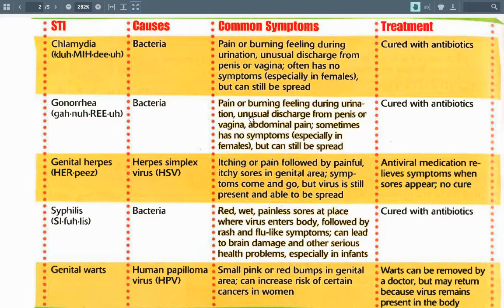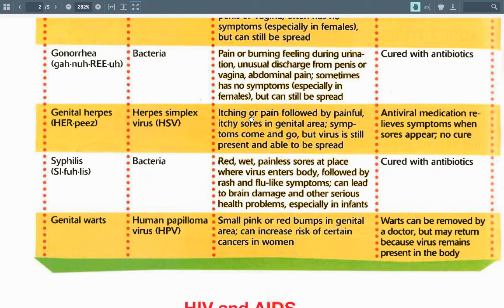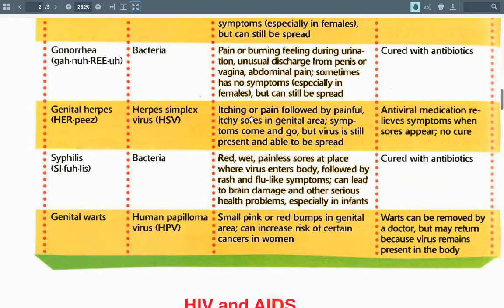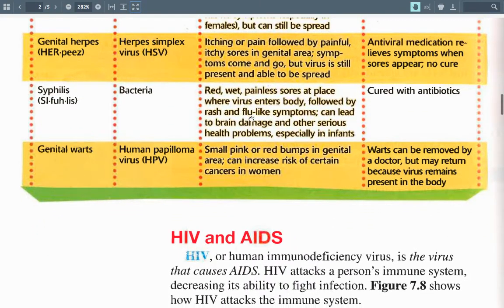Genital herpes is caused by the herpes simplex virus. Symptoms include itching or pain followed by painful sores in the genital area. Symptoms come and go, but the virus is still present and able to spread. Antiviral medications relieve symptoms when sores appear, but there is no cure. Once you've got herpes, it will come and go and can flare up all throughout your life.